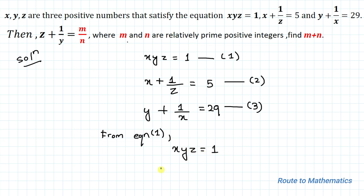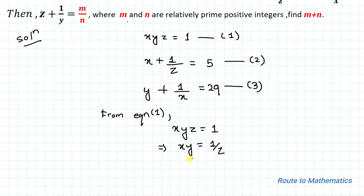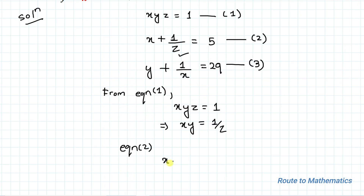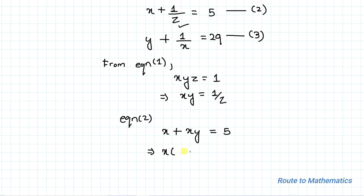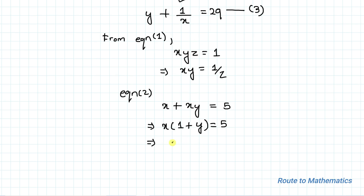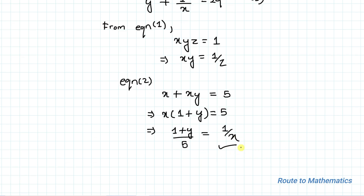From equation 1, xyz = 1, we can write xy = 1/z. Substituting this value of 1/z into equation 2, we get x + xy = 5. Taking x as common: x(1 + y) = 5. This gives us 1/x = (1 + y)/5 by cross multiplication. So we now have the value of 1/x.